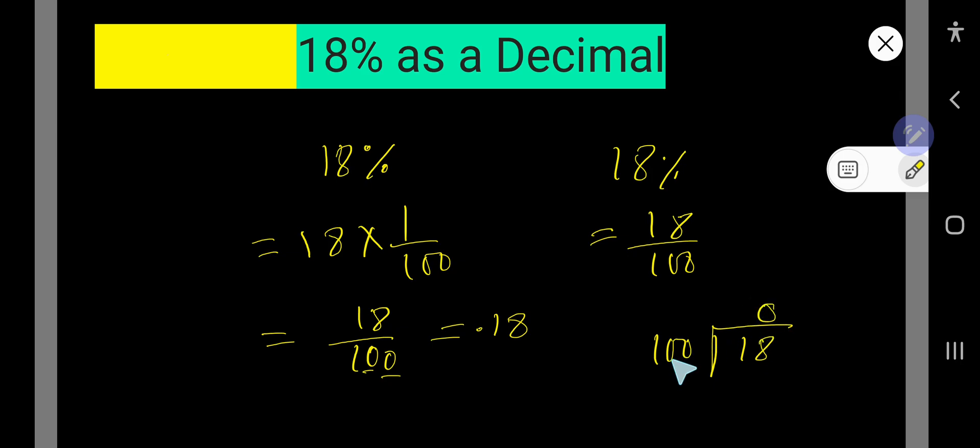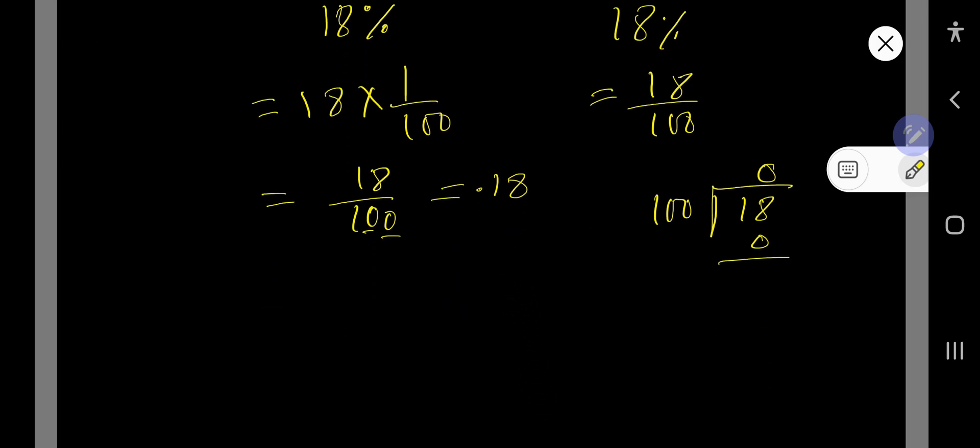0 times 100 is 0. If you subtract, then you are getting 18. But 18 is a whole number, so you can consider the decimal here and you can add any number of zeros. If you do this, actually you are not changing the value of 18.